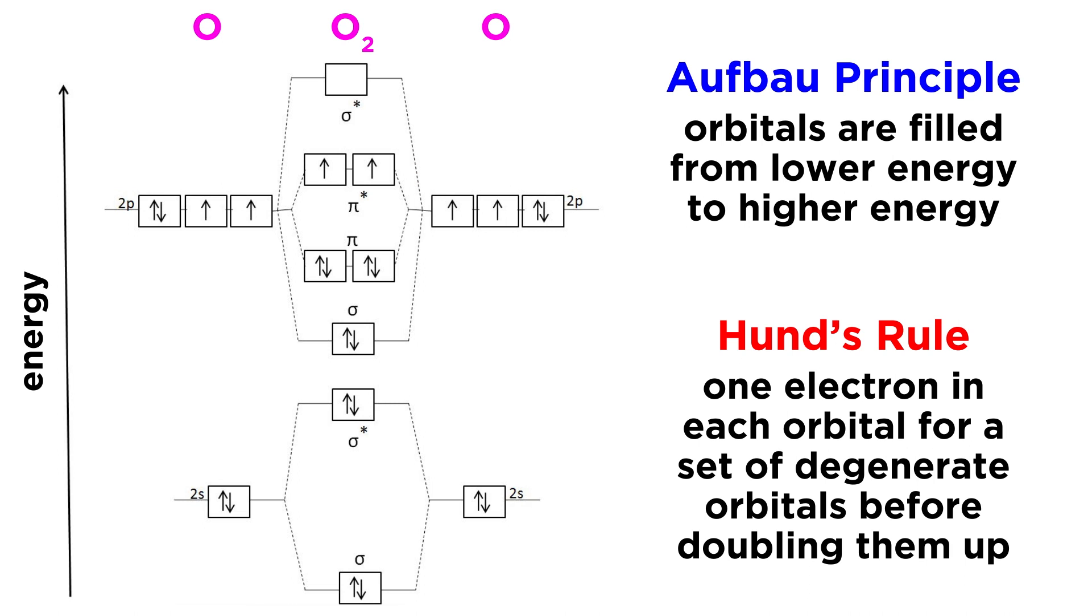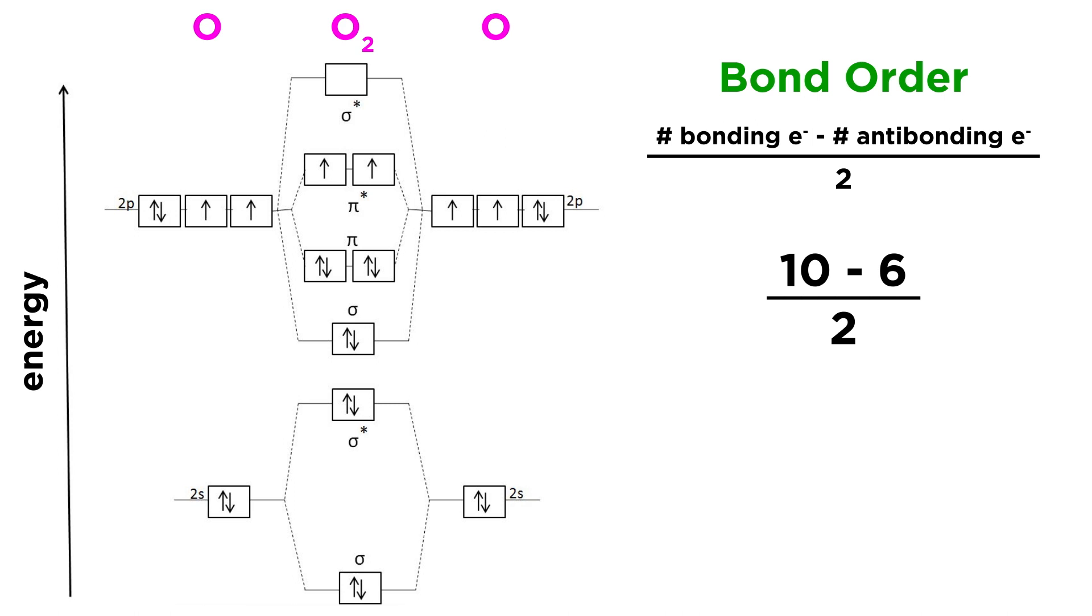We've already learned in a previous tutorial how to fill in these MO diagrams for certain diatomic molecules, like O2, and how to use them to calculate bond order. Here's that diagram one more time, along with the calculation for bond order.